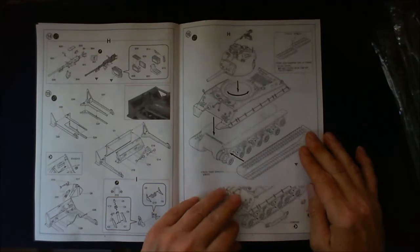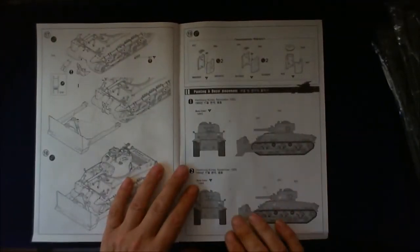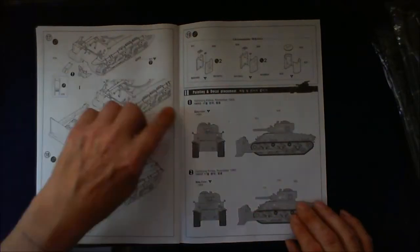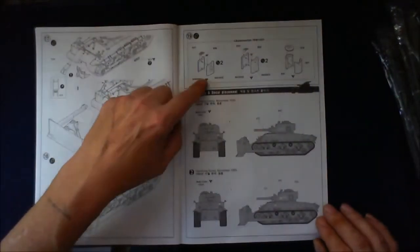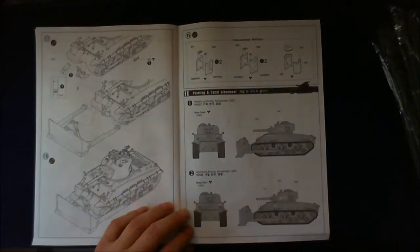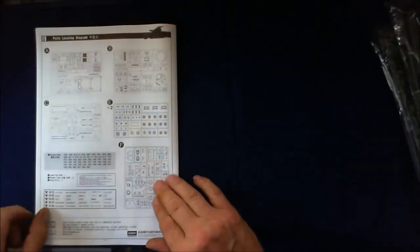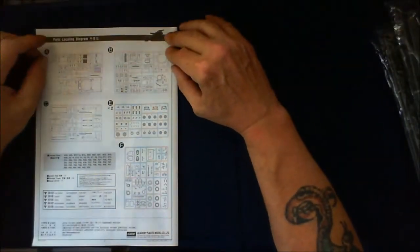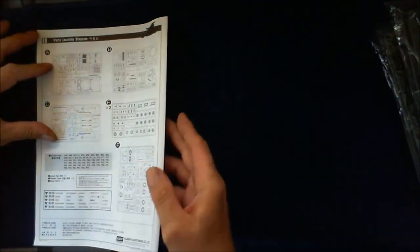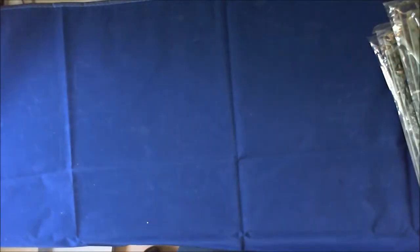And I've ordered from Friul Model a nice set of metal tracks to go with this, so that will be nice. Just finishing off, putting the blade on, some fuel cans, then just telling you where to put your stickers, transfers, and all your bits and pieces. And on the back we've got a sprue map. That's it on that one, so I shall drop the camera down, I'll open these bags, and we'll have a look at the sprues.